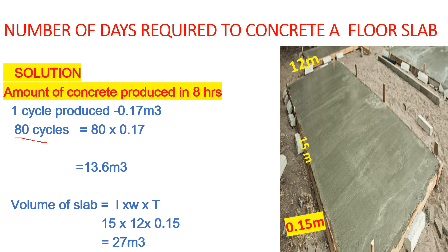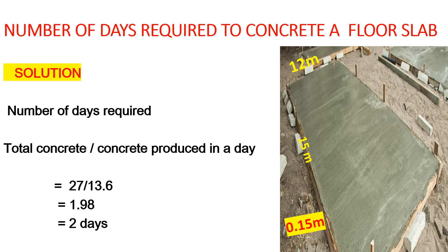Now let's find the number of days. In one day we are producing 13.6 cubic meters and the total volume required is 27 cubic meters. The number of days required equals total concrete divided by concrete produced per day: 27 divided by 13.6 equals 1.96, so it will take approximately 2 days to complete this work. That is how you calculate the number of days required to cast your concrete. It is essential for planning, knowing how long you'll be on site, and budgeting for hired materials and labor.